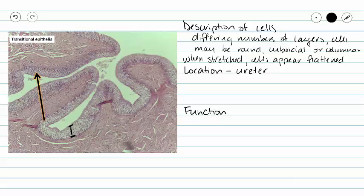Our urinary bladder is also lined with transitional epithelium, as well as a portion of the urethra.